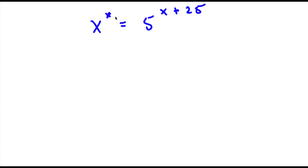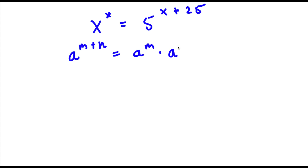So we have x to the power of x is equal to 5 to the power of x plus 25. Now, the first thing is if we have something in the form a to the power of m plus n, this is equal to a to the power of m times a to the power of n. So in this case, we have 5 to the power of x plus 25. We can think of a as 5, m as x, and n as 25.